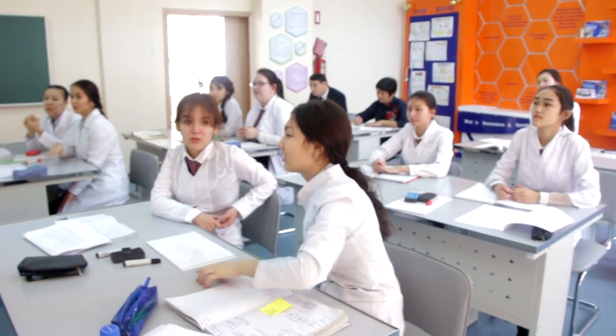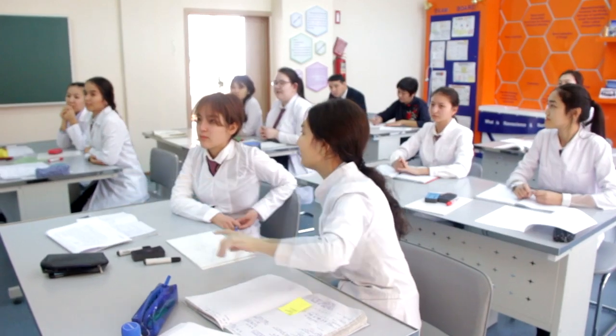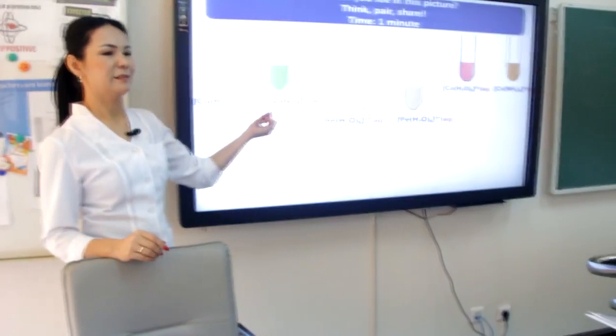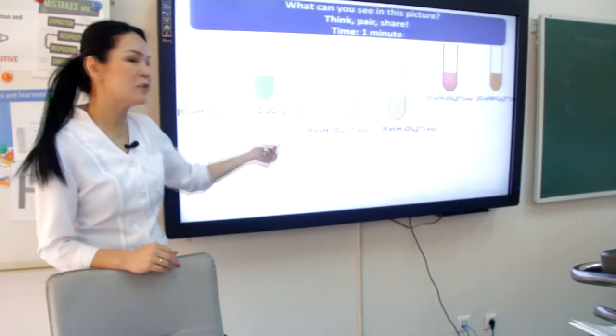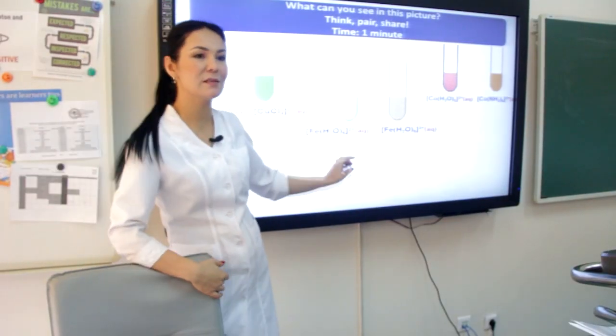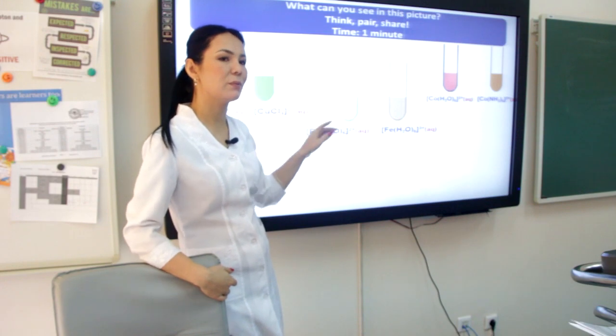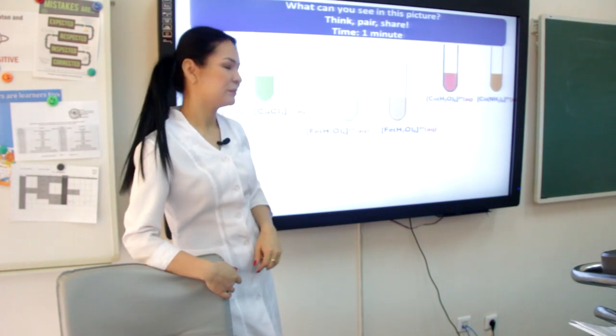Nazgul, for the first one, why does the color change? Well done — this is a change in coordination number or change in ligands. Second one — I think the changes are seen because of the change in oxidation state. Well done — different oxidation state.